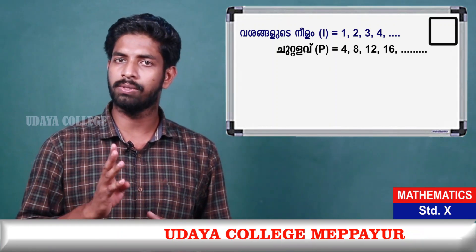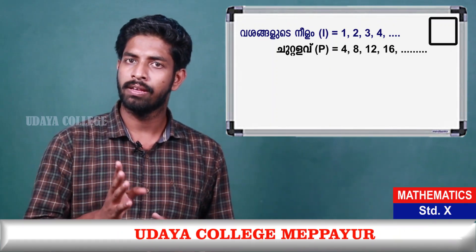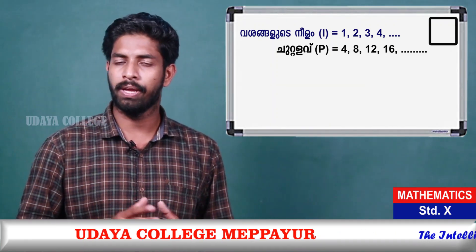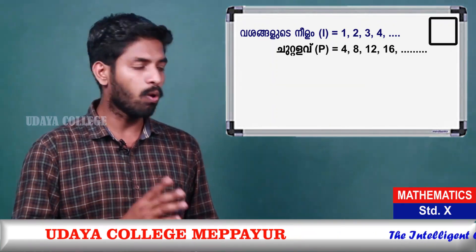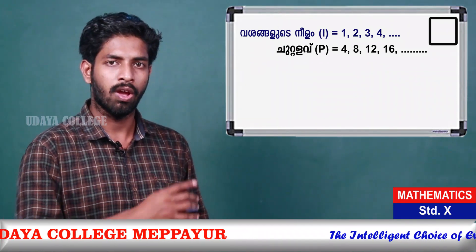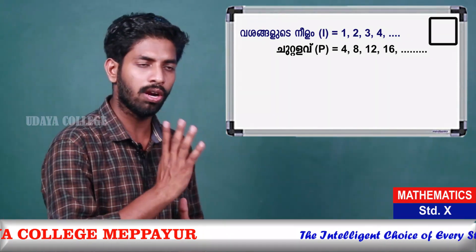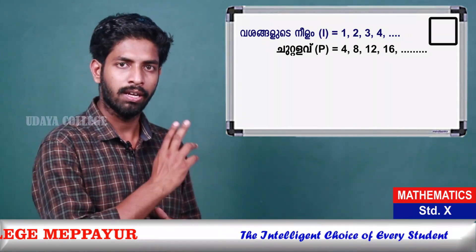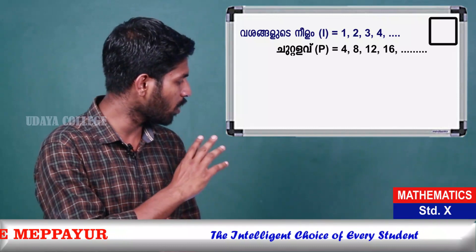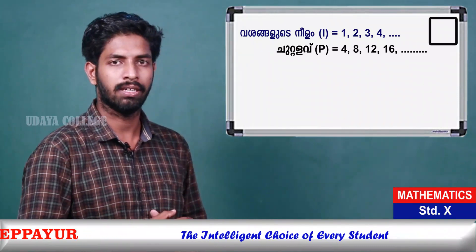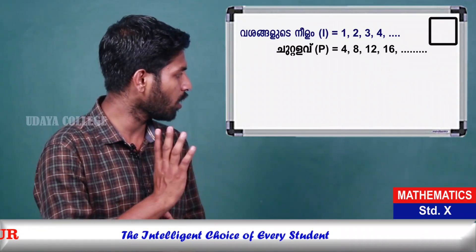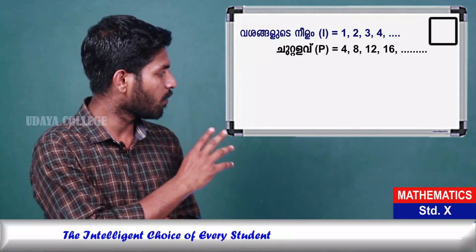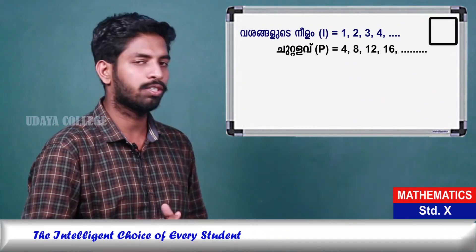That means four times the side equals the perimeter. So: 1×4 = 4. Second one: 2×4 = 8. Third one: 3×4 = 12. Fourth one: 4×4 = 16.